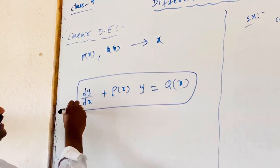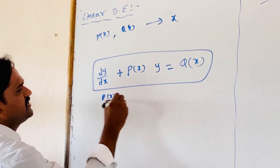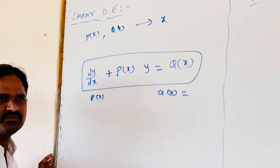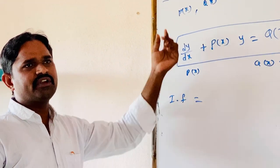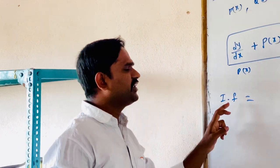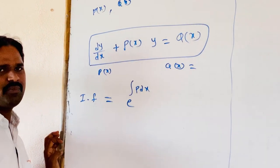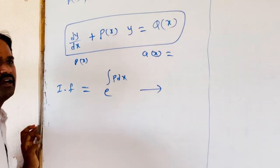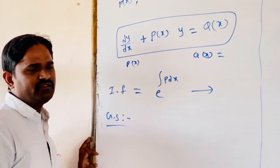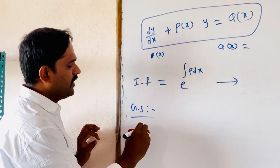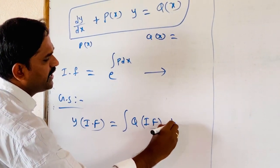For finding the solution of a linear differential equation, first we identify what p(x) and q(x) are — functions in terms of x — and next, find the integrating factor for the differential equation. The integrating factor is e raised to the power of the integral of p dx. Using this, we find the integrating factor, and then the general solution of the linear differential equation.